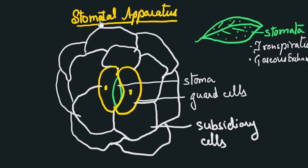The guard cells, apart from the nucleus, also carry tiny green structures called chloroplasts. Chloroplasts are cell organelles that carry out photosynthesis. So this was a very simple structure of the stomatal apparatus.